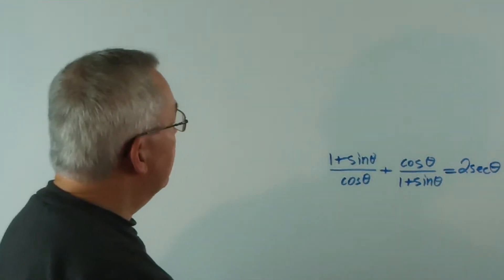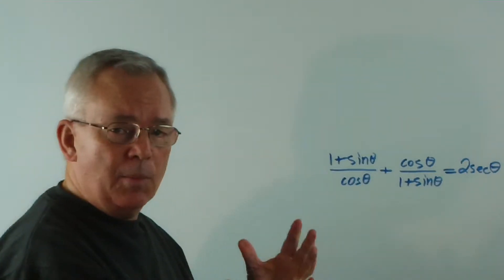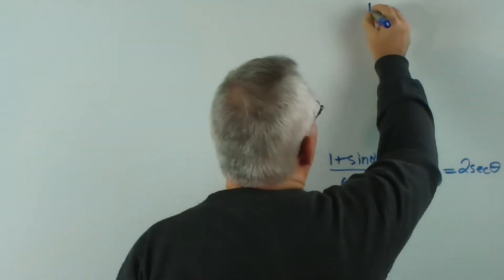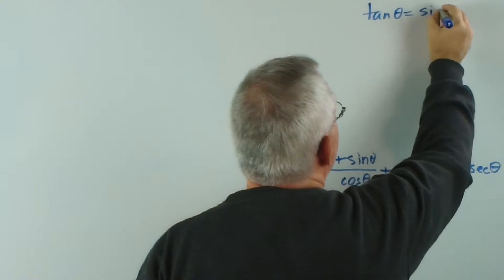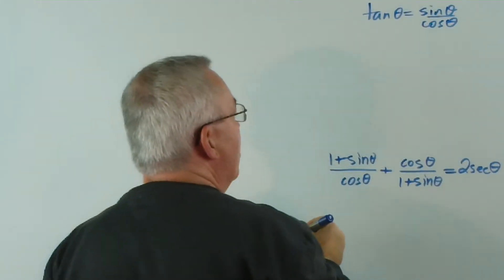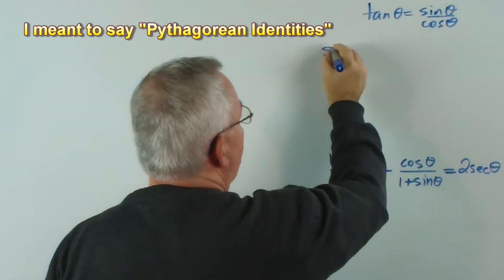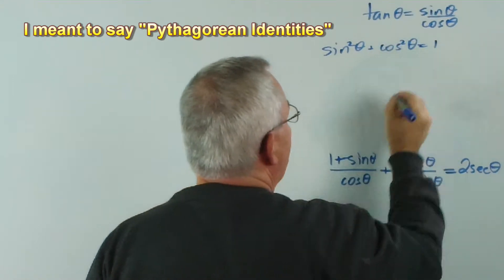Now again, as I did in the last video, I'm going to start by writing a summary of the four identities that we need to remember. We may use tan θ is sin θ over cos θ, or any of the three trigonometric identities. sin² θ plus cos² θ equals 1.